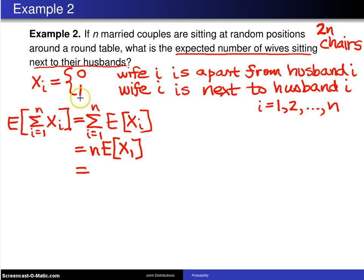Well, this happens to be a Bernoulli random variable because it can only take on the values 0 and 1, and the expected value of a Bernoulli random variable is the same as the probability that that Bernoulli random variable takes on the value 1.